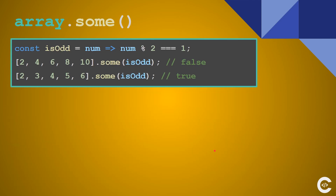The second method is some. Some is different from every in that it checks if there is at least one element in the array which satisfies the condition. The first line evaluates to false because all elements in the array are even and our callback is isOdd, which checks if the element is odd or not.